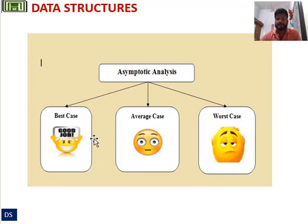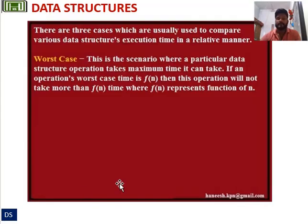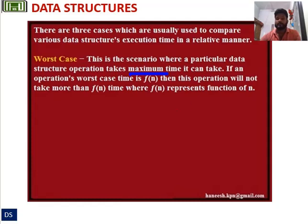We will get the best result in best case, average result in average case, and worst result in worst case. Worst case is the scenario where a particular data structure operation takes the maximum time it can take. If an operation's worst case time is f(n), then this operation will not take more than f(n) time.